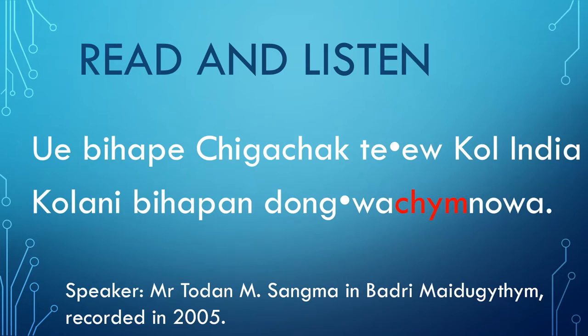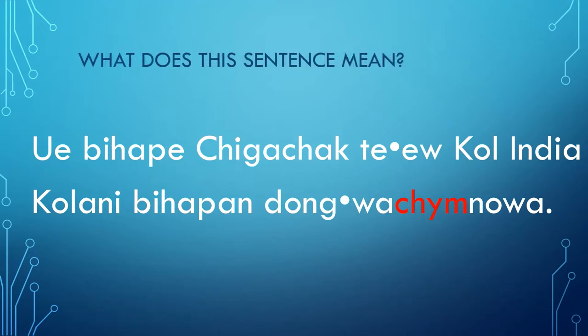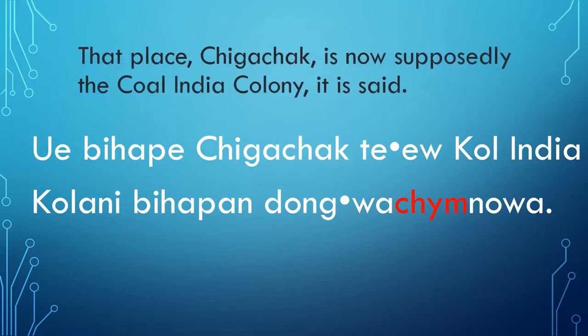Please read and listen to the example of Mr. Todan M. Sangma about the history of Badri. Notice the use of the meaningful part Chm at the end. It means that place Chigachak is now supposedly the Khol India colony, it is said.